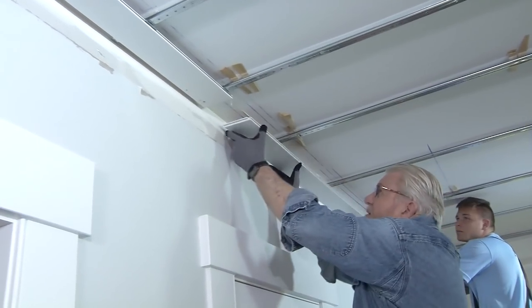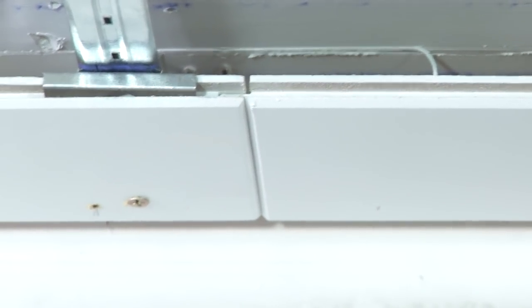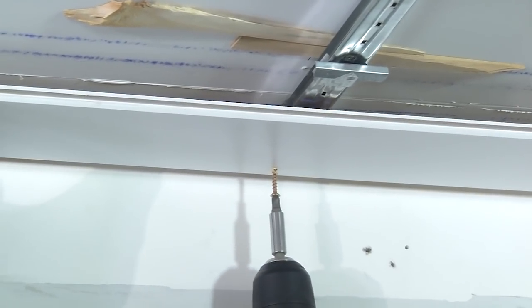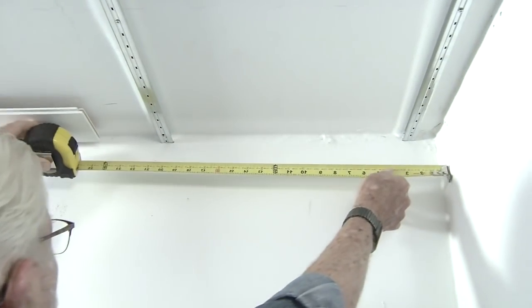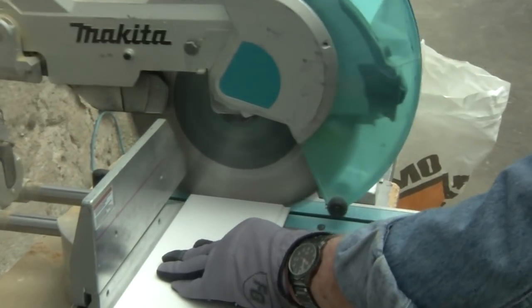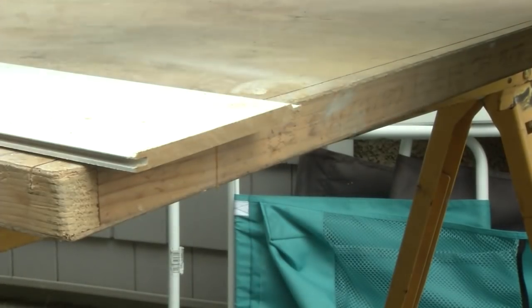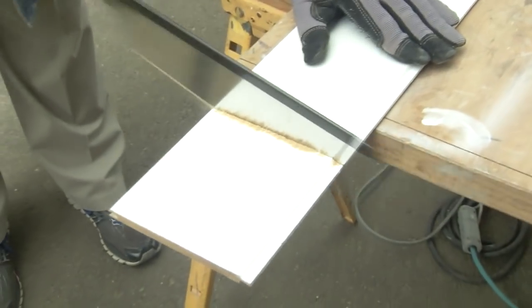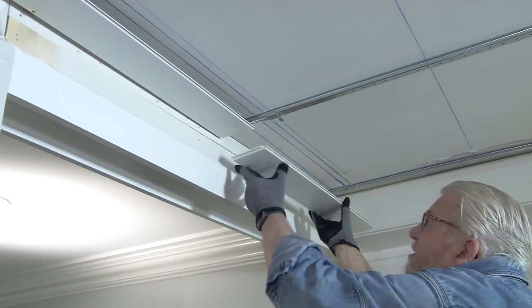The ends of each plank also have an interlocking tongue and groove design. The last plank in each row will need to be cut to length. This can be done using a power miter saw, circular saw, or even a hand saw. Remember to leave a three-quarter inch expansion gap between the end of the plank and the wall.